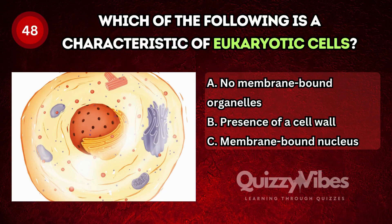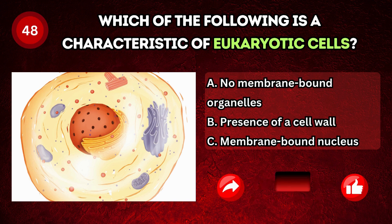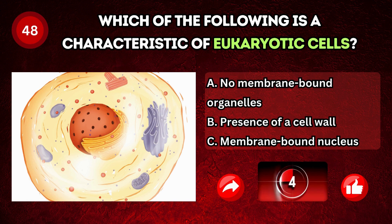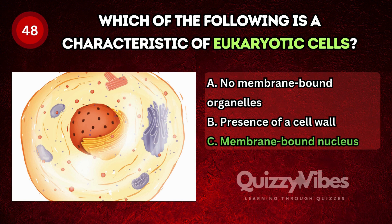Which of the following is a characteristic of eukaryotic cells? Answer C, membrane-bound nucleus.